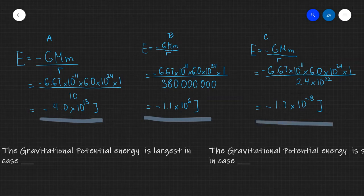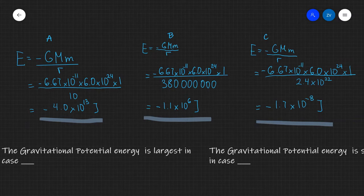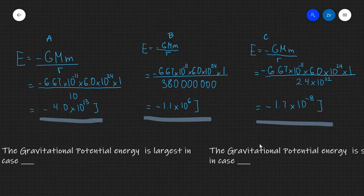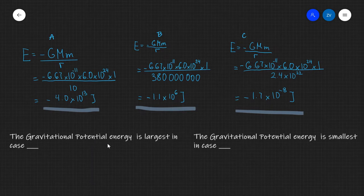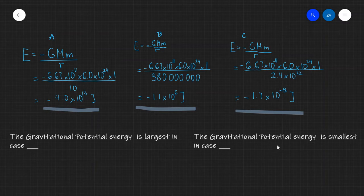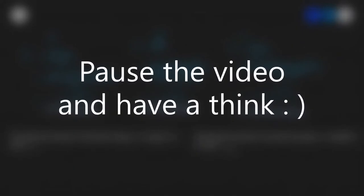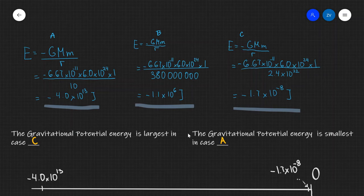So congratulations you can apply the gravitational potential energy equation now and we've tested that. Now what I want you guys to do next is answer the following questions. The gravitational potential energy is largest in case A, B or C and the gravitational potential energy is smallest in case A, B or C. Pause this video and have a think about those two questions and let's have a look at the answers.